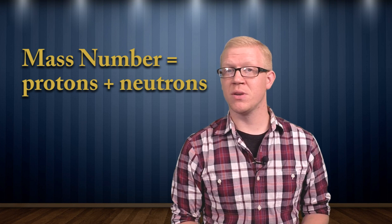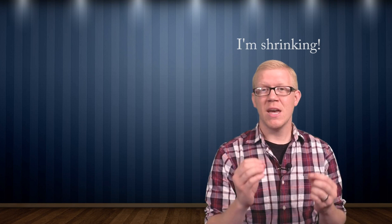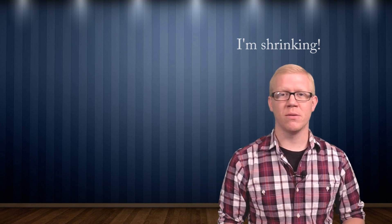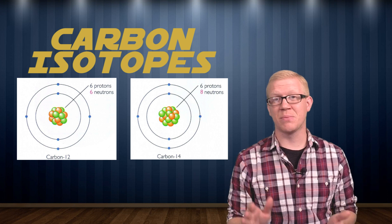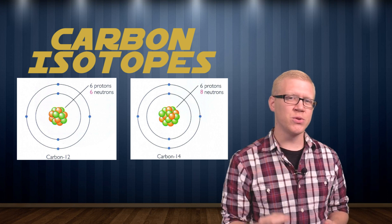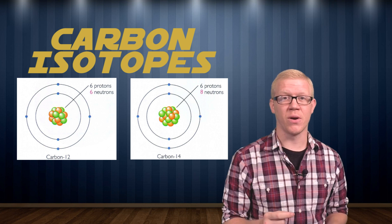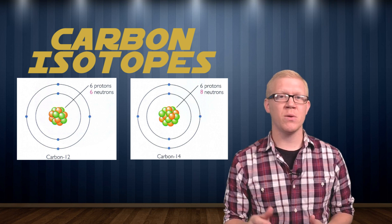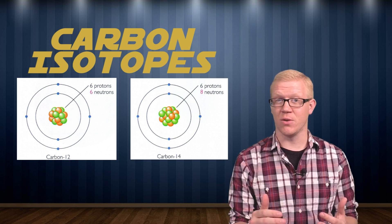While an atom of a certain element will always have the same number of protons, it can have a different number of neutrons, and therefore a different mass number. For example, carbon always has six protons, but carbon-12 has six neutrons, while carbon-14 has eight neutrons. Atoms of a certain element with different numbers of neutrons are called isotopes.